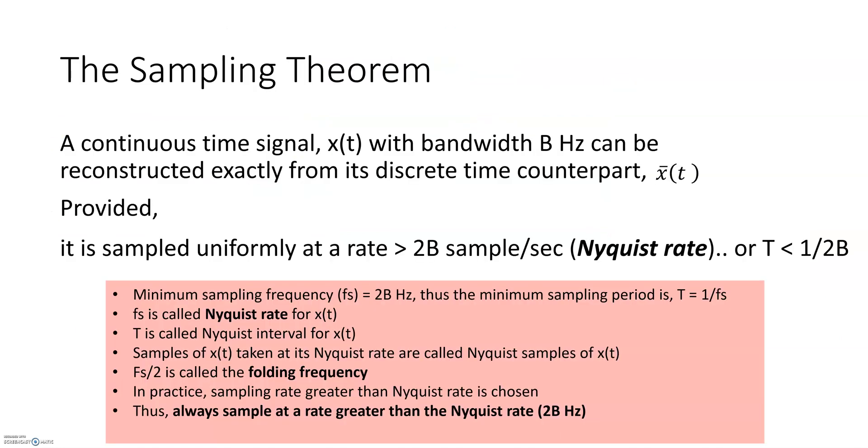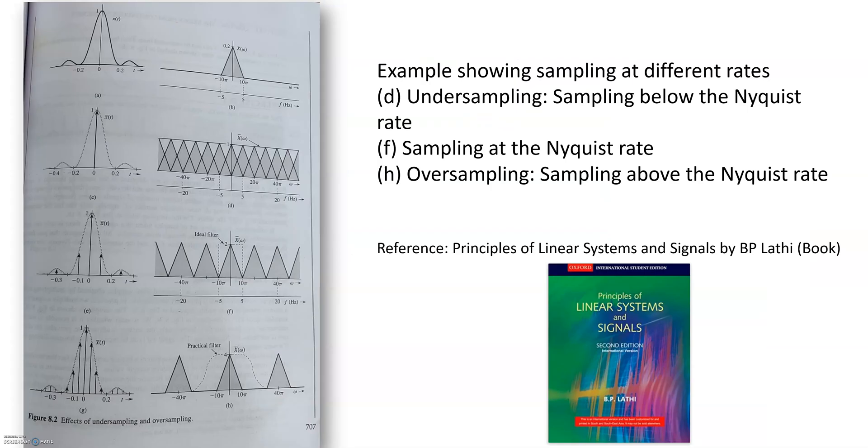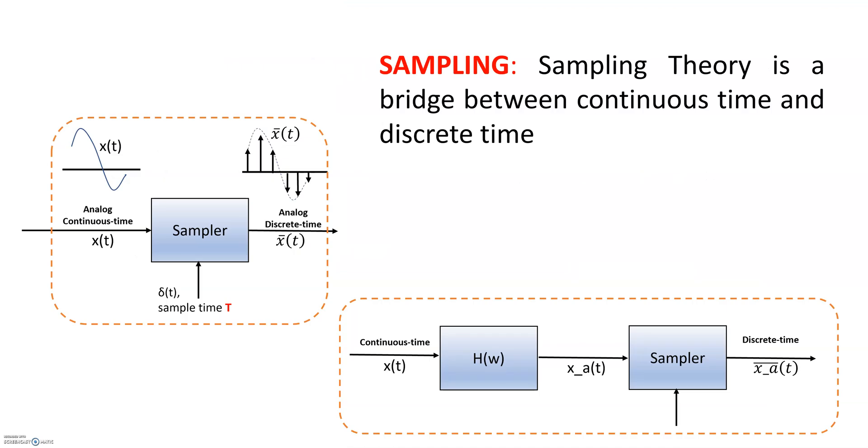Then we learned that in order to decide how we want to sample this signal to go from the continuous analog to analog discrete, the important thing is that we must sample at a rate greater than the Nyquist rate, which is 2B, where B is the bandwidth of the signal. And that's important because we want to make sure that we are able to reconstruct the original signal from the sampled signal.